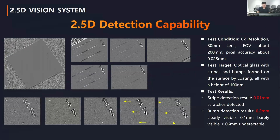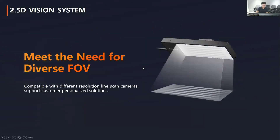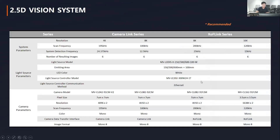After talking about the principle, what is the actual capability of this system? For scratch detection, it achieves an accuracy of 0.01 millimeter. For bump detection, accuracy is 0.2 millimeter, and 0.06 millimeter bumps are undetected. The system supports different field-of-view requirements and is compatible with 2K, 4K, 8K, and 16K cameras. It supports two different interfaces — external fiber link and Camera Link — with four different resolutions and three different field-of-view options for different workpieces.